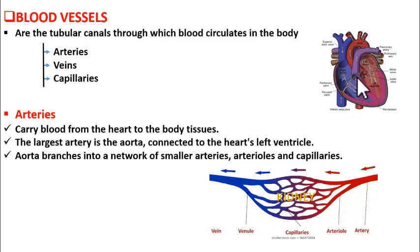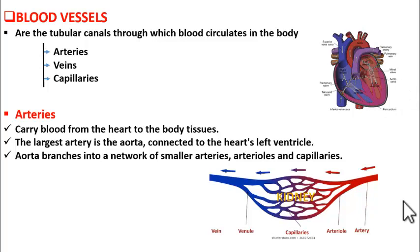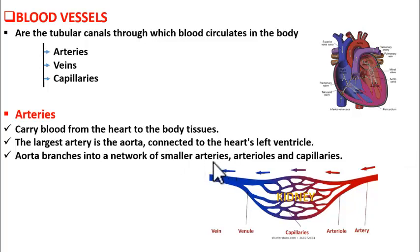The pulmonary artery carries blood to the lungs for oxygenation, and the aorta carries oxygenated blood to all body parts. After coming out of the heart, the aorta divides into smaller arteries, and each smaller artery enters into a specific organ.